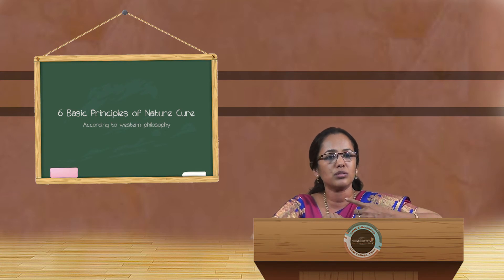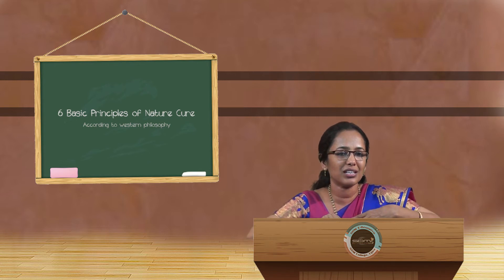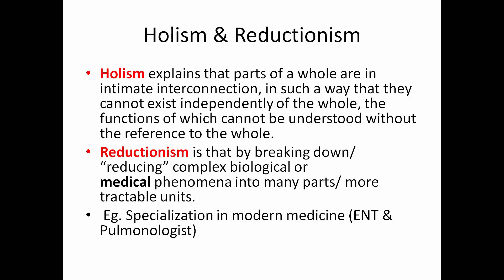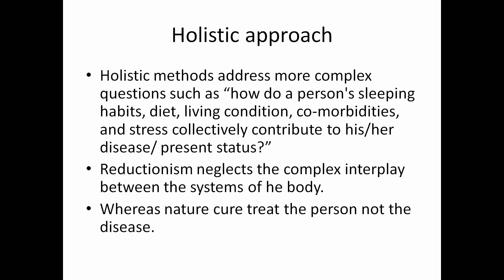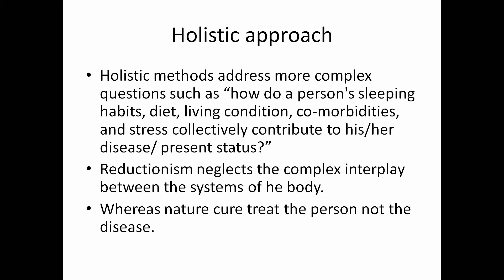An example of reductionism is specialization in modern medicine. The respiratory system includes the upper respiratory tract — nose and throat — and the lower respiratory tract, yet there are separate specializations: ENT and pulmonology. When a patient has a respiratory problem, each specialist sees the disease as independent entities — ENT looks only at ear, nose, and throat, not considering the rest of the system. A holistic approach instead asks how a person's sleep habits, diet, living conditions, comorbidities, and stress collectively contribute to disease.